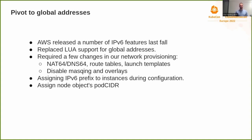Global addressing required us to do quite a few changes in how we provision our networking. We had to enable NAT64 and DNS64 so that the cluster can reach things without an IPv6 address. We had to do some changes to the route tables and to the launch templates. On instances, we also had to do things like disabling masquerade and overlays, since they would be getting in the way when using global routing.